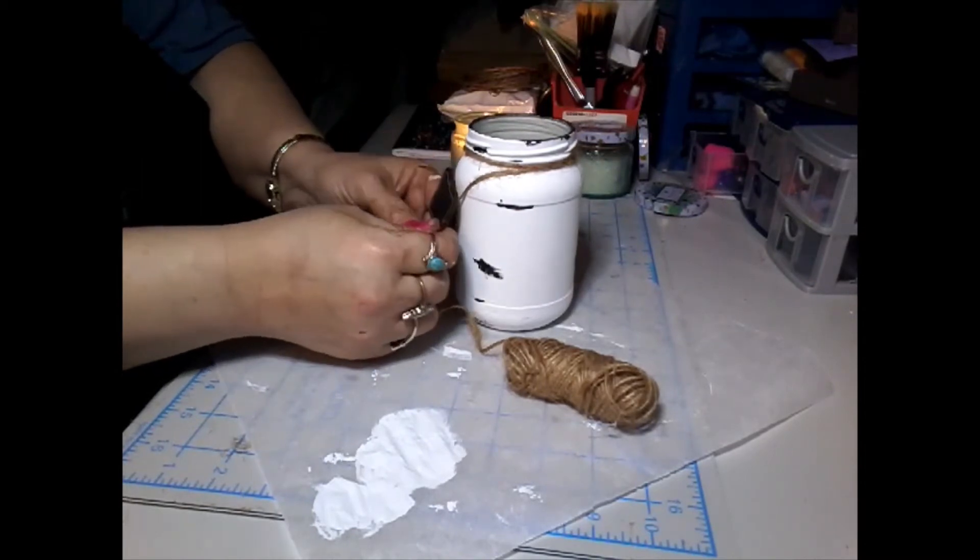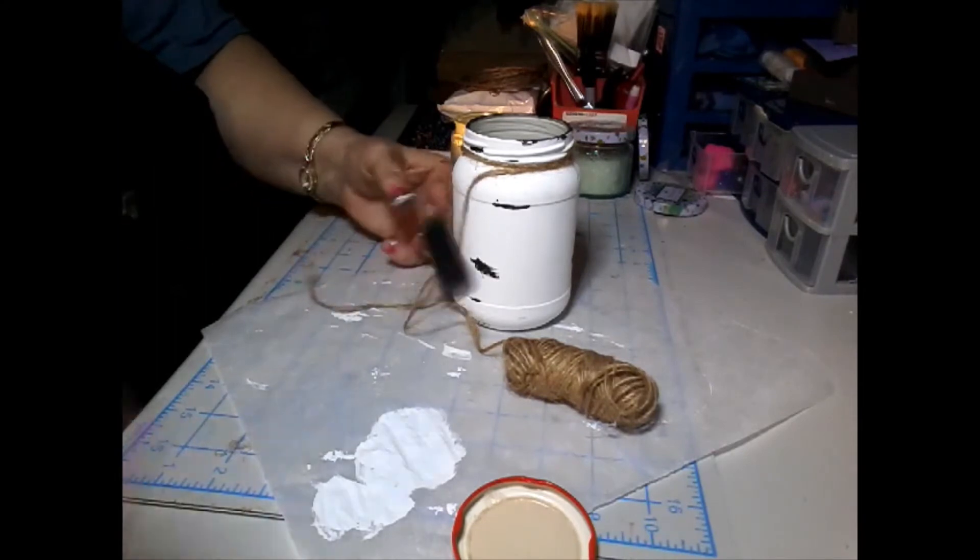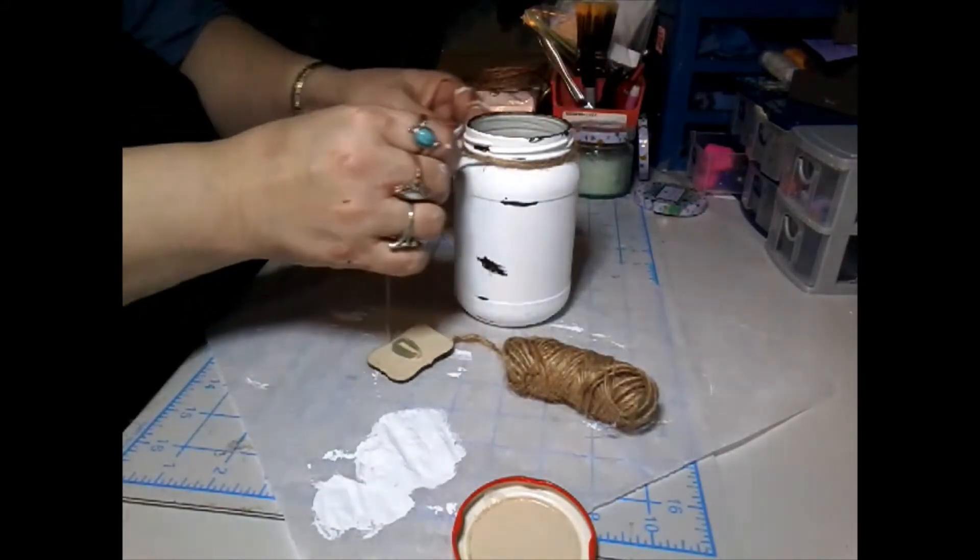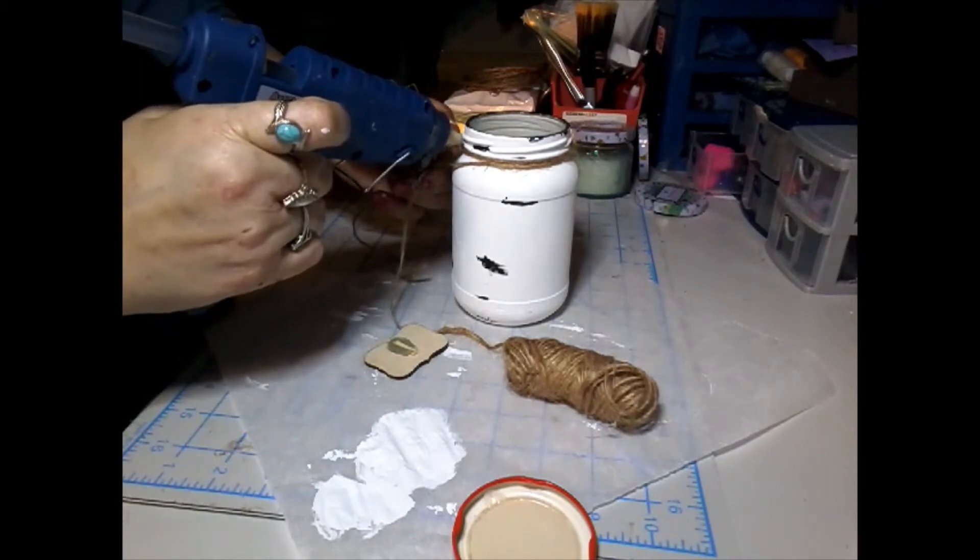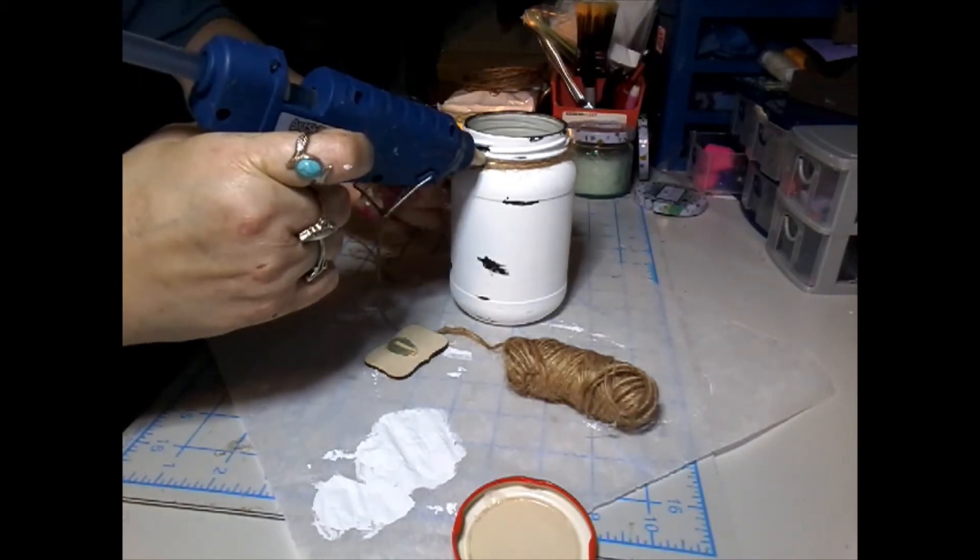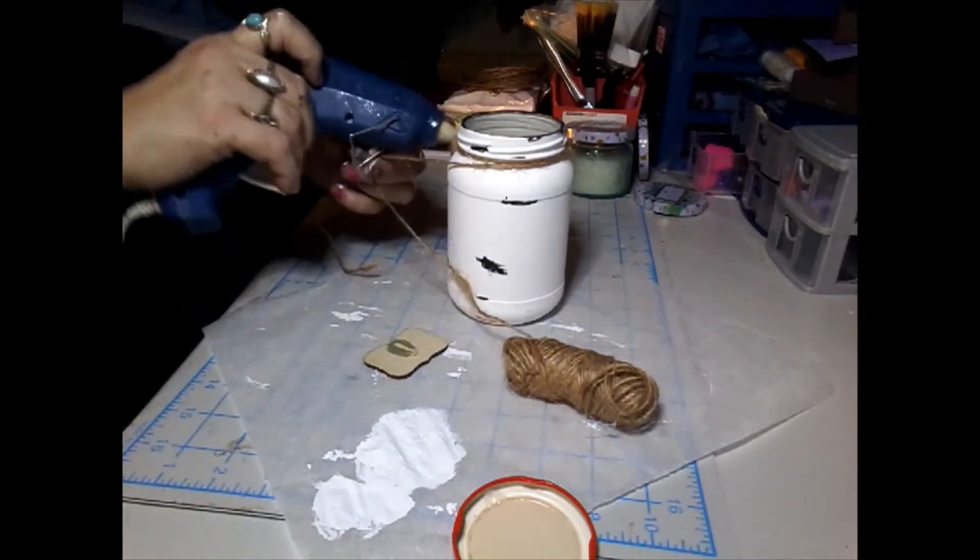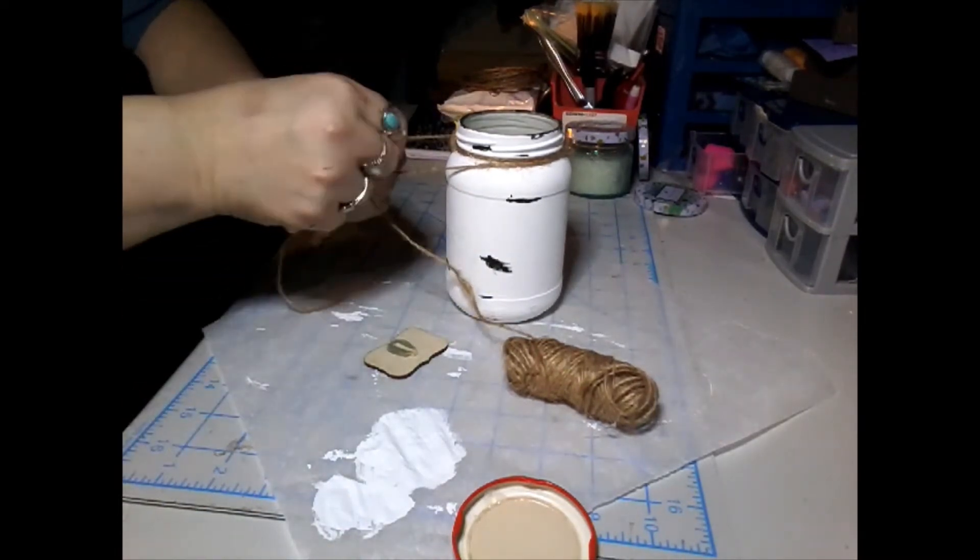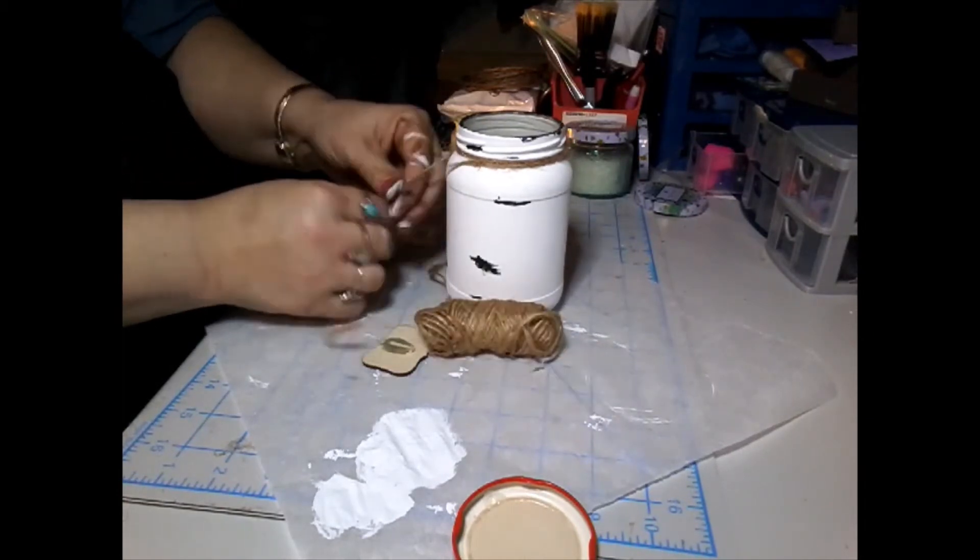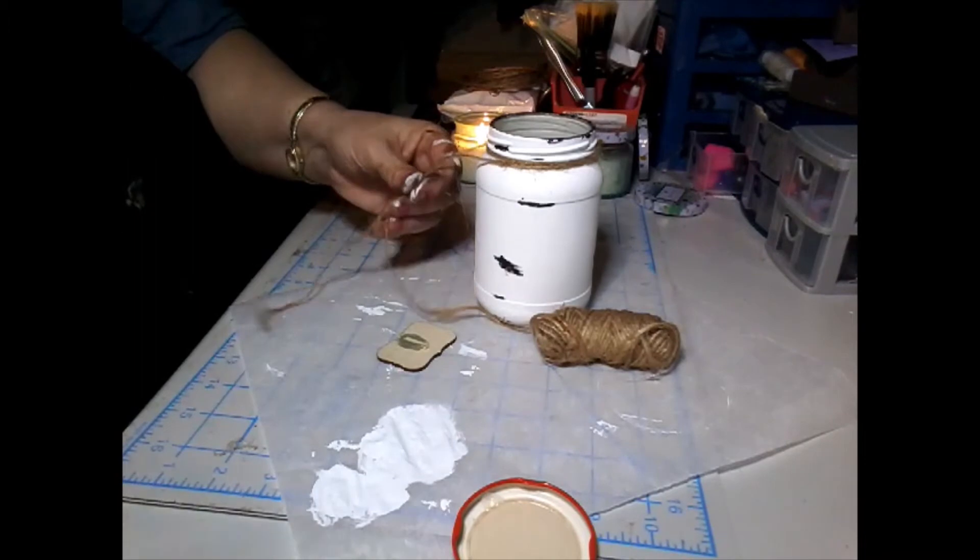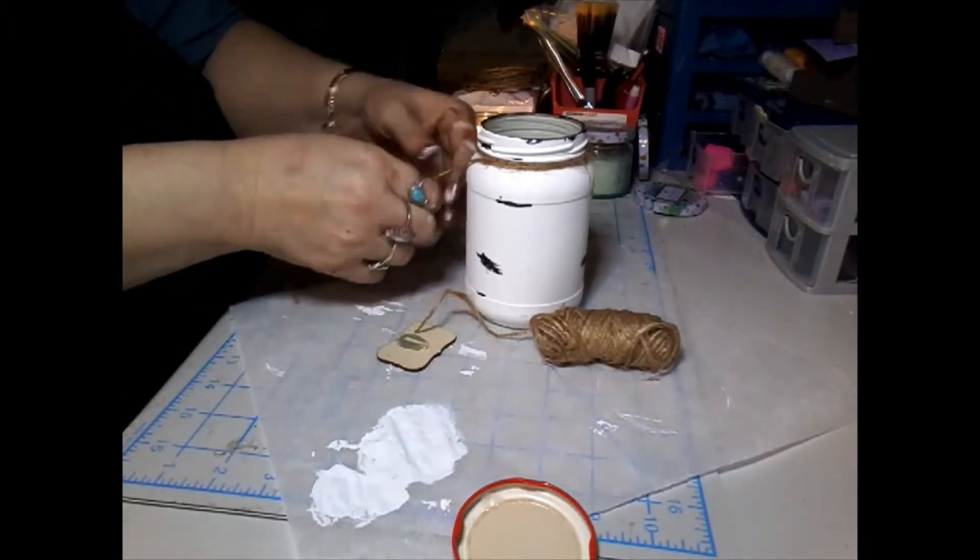I'm going to take these little chalkboard label things that I picked up at the Dollar Tree. They had a pick on them but I pulled the pick off. I'm just going to hot glue it to my jute. You can hot glue it to the jar if you'd like. I'm adding a little hot glue to the jute and the jar just to get it to stay a little bit better. I'm doubling over my jute, giving it a trim, and then I'll add my little chalkboard label.